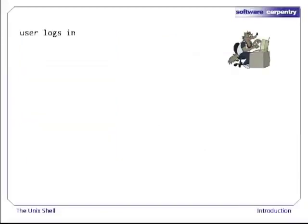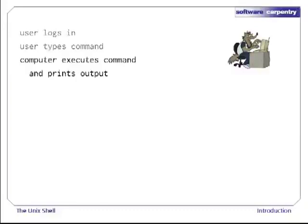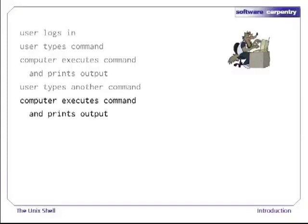Normally, a user starts a CLUI session by logging in with a user ID and a password. The user then types a command. The computer executes the command and prints its output — in the case of older terminals, literally printing the output onto paper a line at a time. The user then types another command, which the computer executes, displaying output, and so on until the user logs off and takes his or her roll of paper away to study.